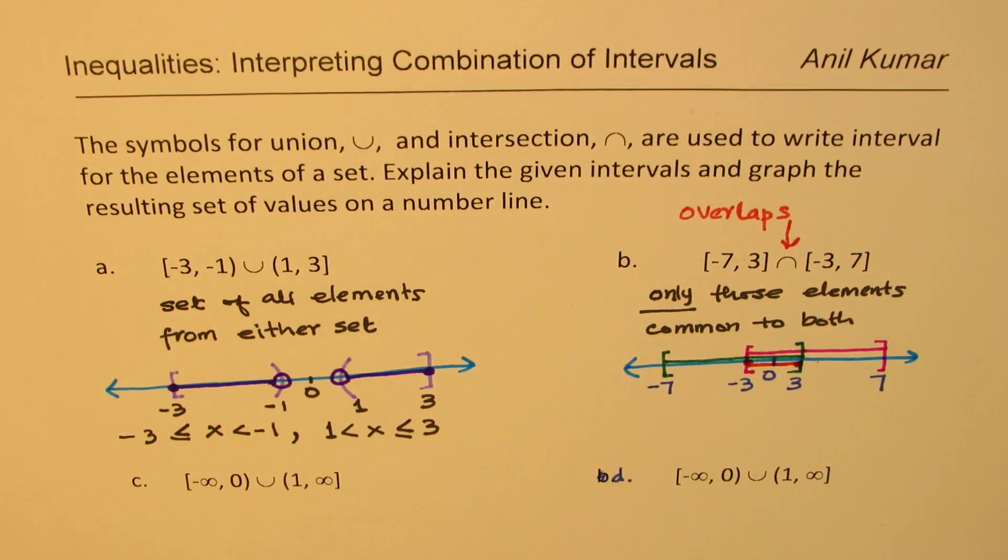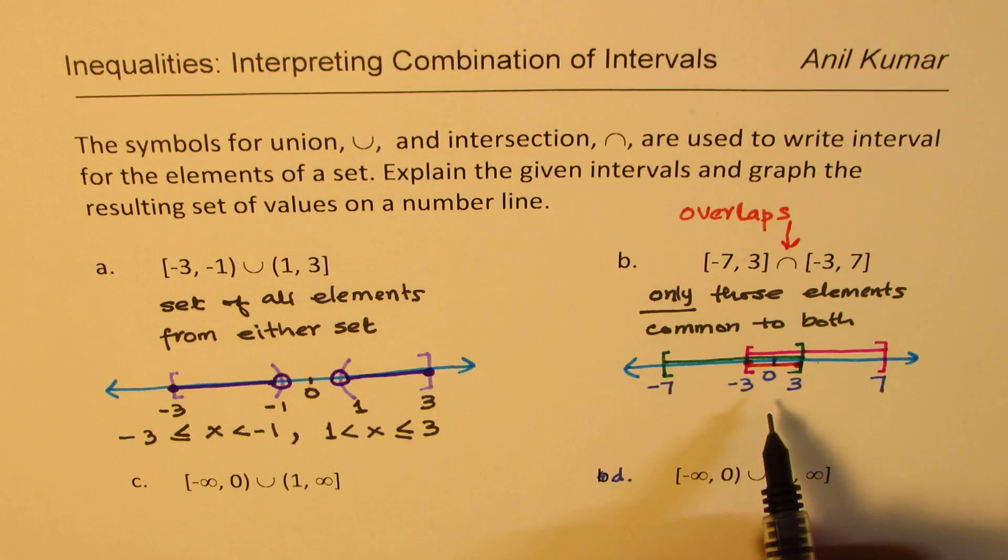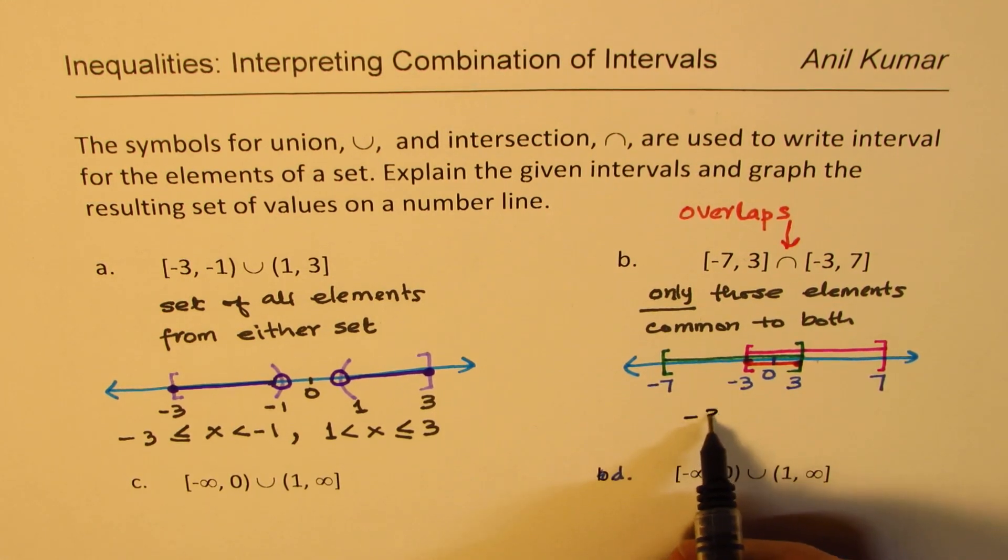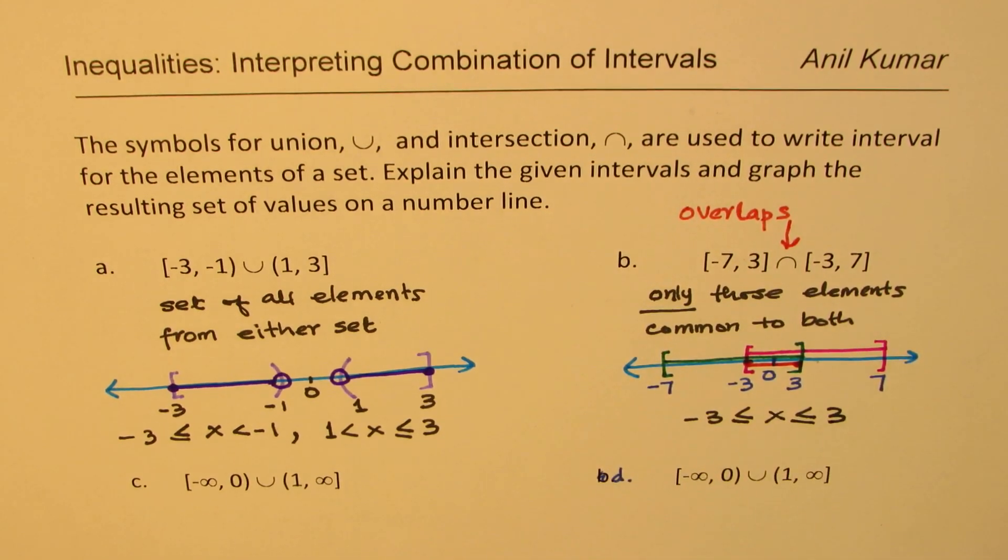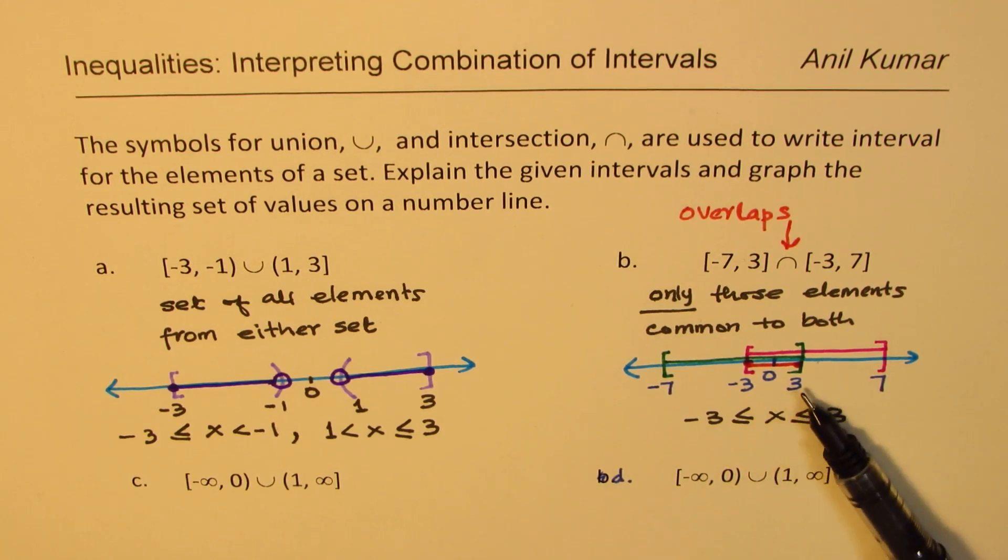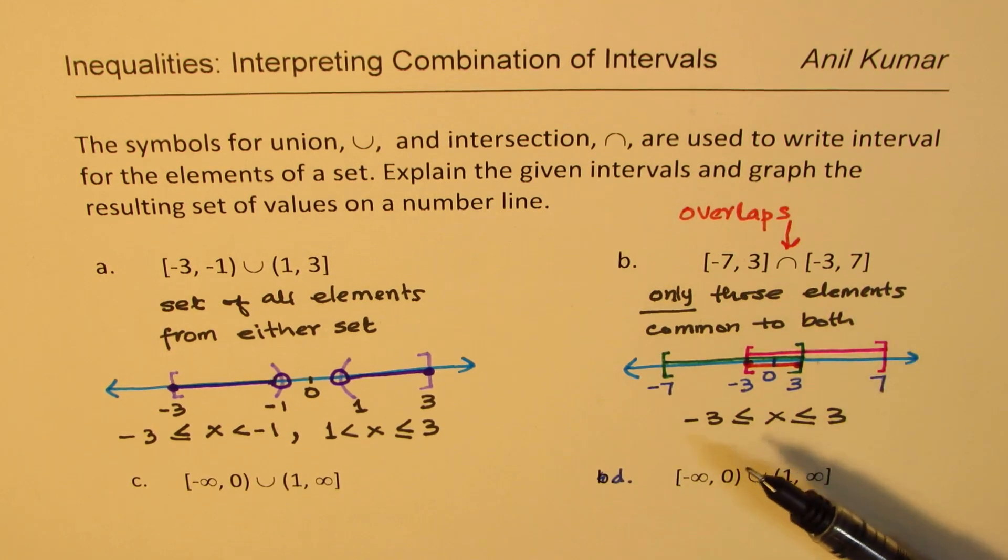So, what overlaps is in between. Do you see this part? So, that becomes our solution. So, in this case, the solution set will be from minus 3, we need to include it, to 3. Is that clear to you? So, that is how we are going to interpret the given interval. However, this interpretation is extremely important when you are working with inequalities.